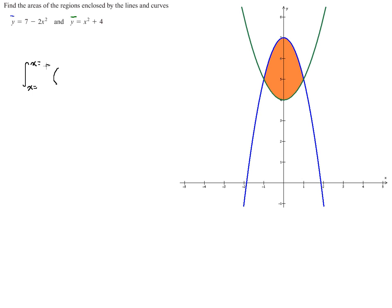So we'll put that in there, 7 minus 2x squared. And then we'll subtract the bottom curve here, or the bottom curve boundary of the region, which is y equals x squared plus 4.